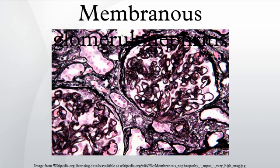Pathogenesis: membranous glomerulonephritis is caused by immune complex formation in the glomerulus. The immune complexes are formed by binding of antibodies to antigens in the glomerular basement membrane. The antigens may be part of the basement membrane or deposited from elsewhere by the systemic circulation. The immune complex activates the C5b-C9 complement, which forms a membrane attack complex on the glomerular epithelial cells, stimulating release of proteases and oxidants by the mesangial and epithelial cells, damaging the capillary walls and causing them to become leaky.